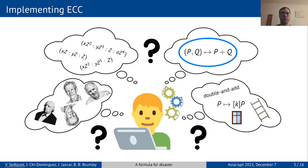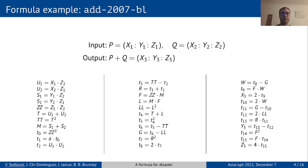So, how does an addition formula look like? Well, it takes two points in the chosen coordinates as inputs and outputs their sum in the same form. There are many intermediate computational steps and on this slide you can see an example.